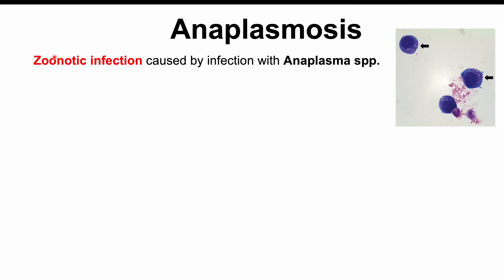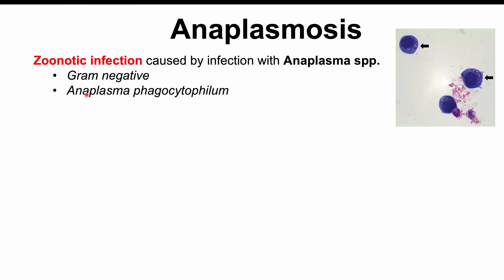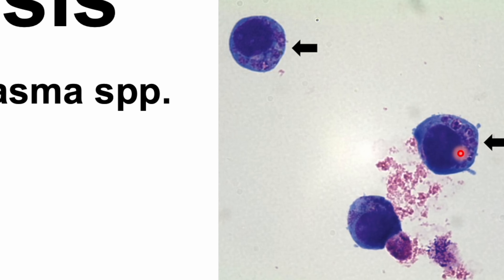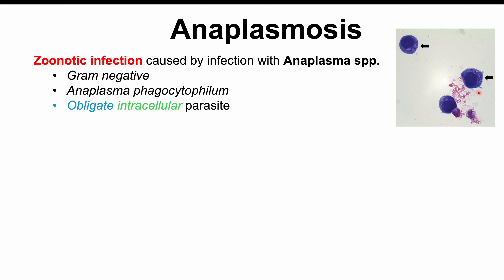Anaplasmosis is a zoonotic infection caused by infection with anaplasma species. A zoonotic infection is an infection from animals, and as we'll see, it's going to be a tick-borne infection. Anaplasma species are gram-negative bacteria, and the species most specifically that often leads to infection is known as anaplasma phagocytophilum. These bacteria are obligate intracellular parasites, meaning they have to live inside the cell. You can see a conglomerate of anaplasma organisms inside a granulocyte in this image.